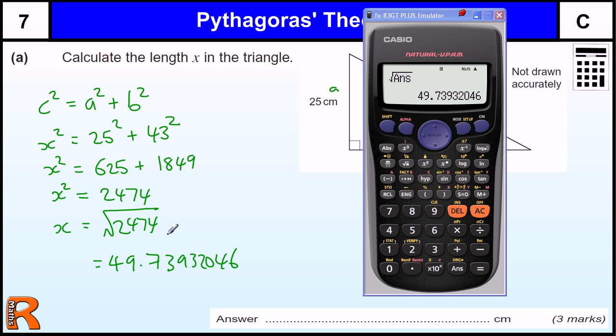Now, if it doesn't say to round the answer, I will always just write down what's on the calculator. There's no need to make a mistake in rounding. If it does ask you to round the answer to a suitable degree of accuracy, then 49.7, always go for three significant figures, unless I think it's more apparent, like it's closer to a whole number.